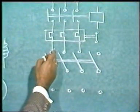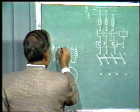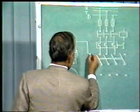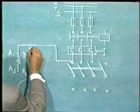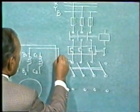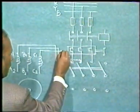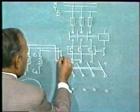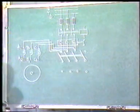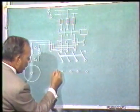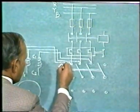Supply from the three phases will be given to A1, B1, C1. So we connect A1 with R phase, B1 to Y phase, and C1 to B phase. Now this is the star position of the switch and this is the delta position of the switch.